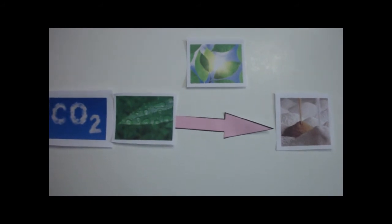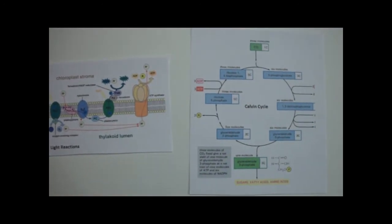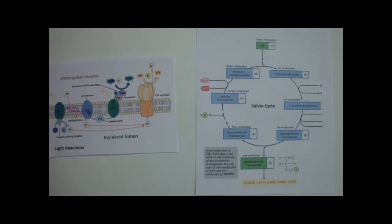However, photosynthesis is actually composed of two separate processes, known as light reactions and the Calvin cycle. The two are complements. Together, they allow plants to create the sugar molecules they need to survive.